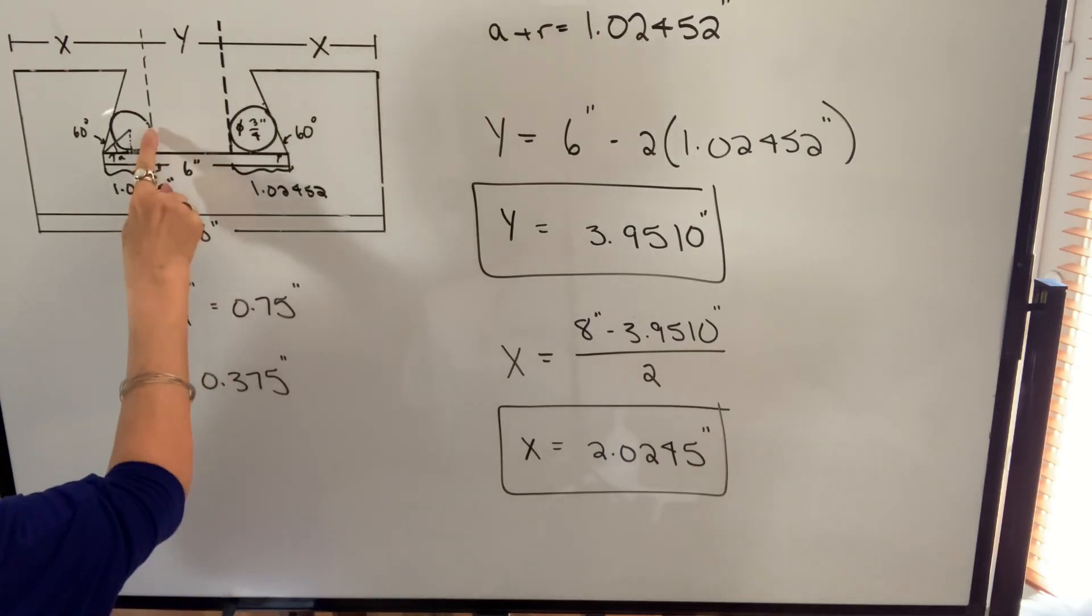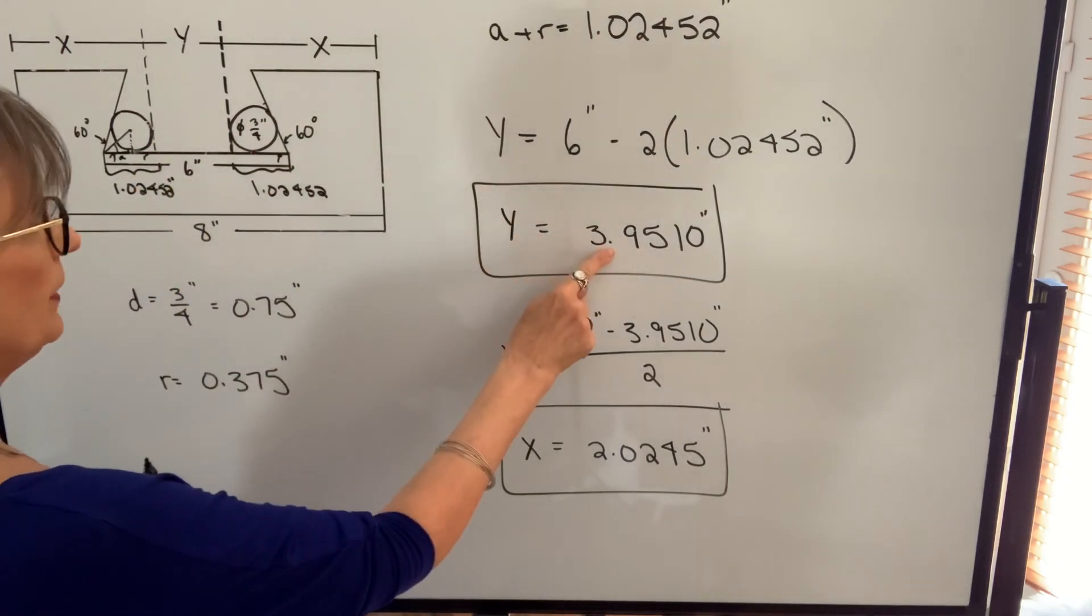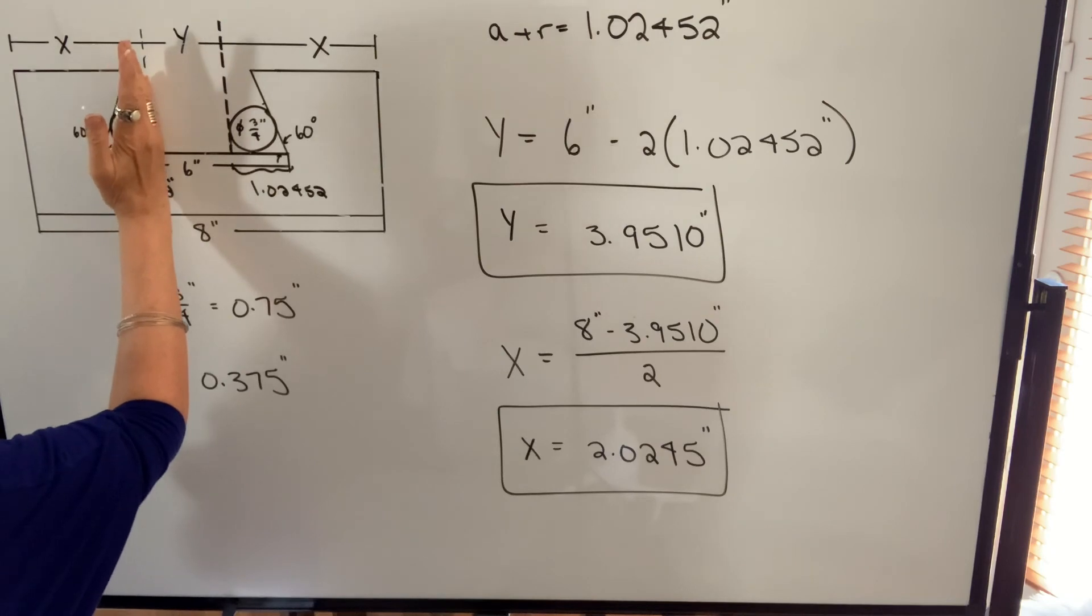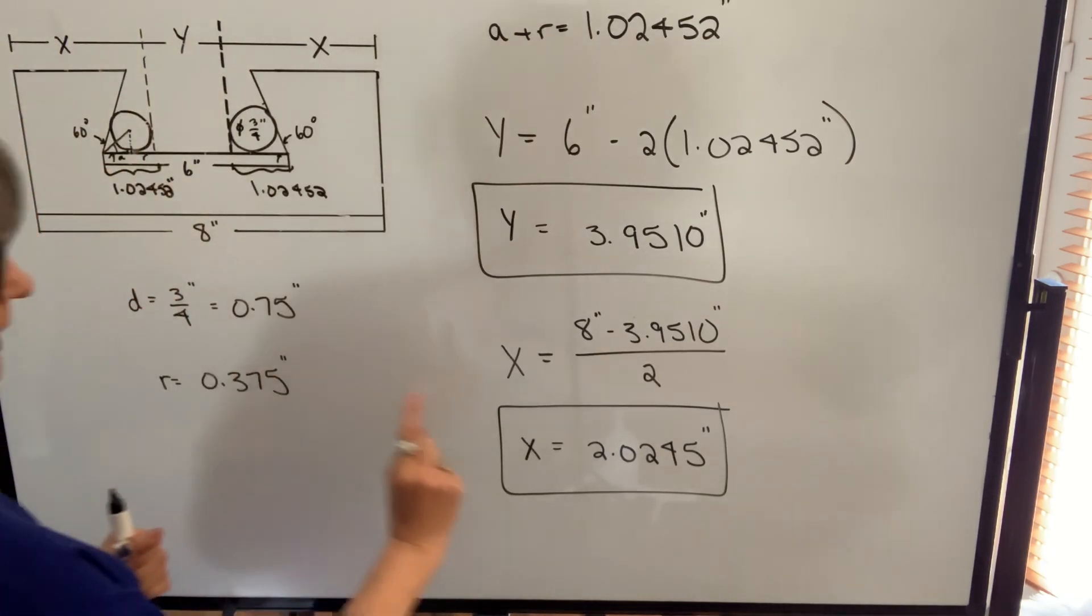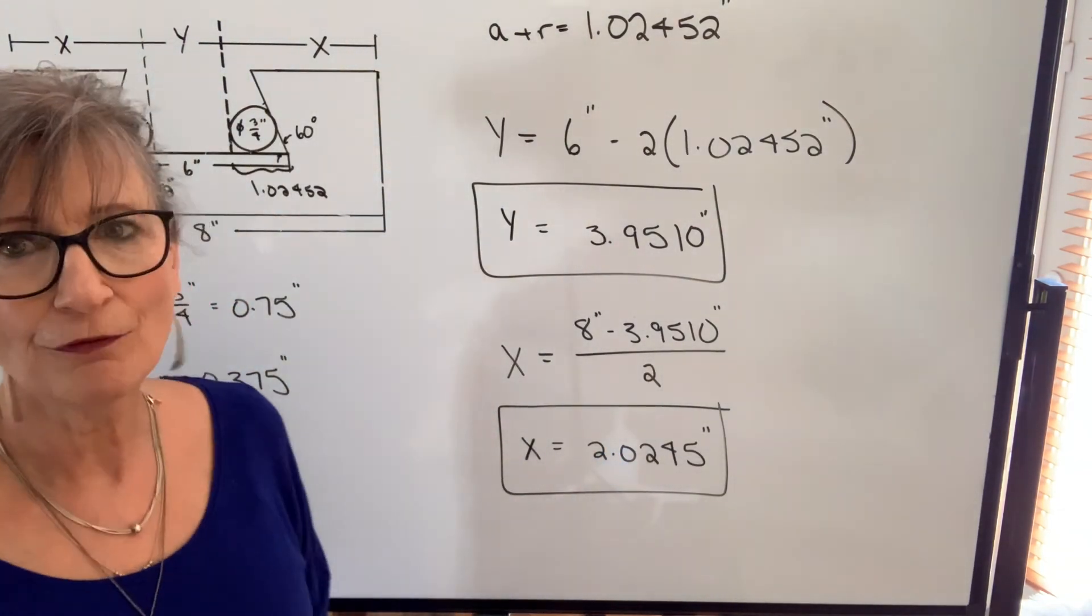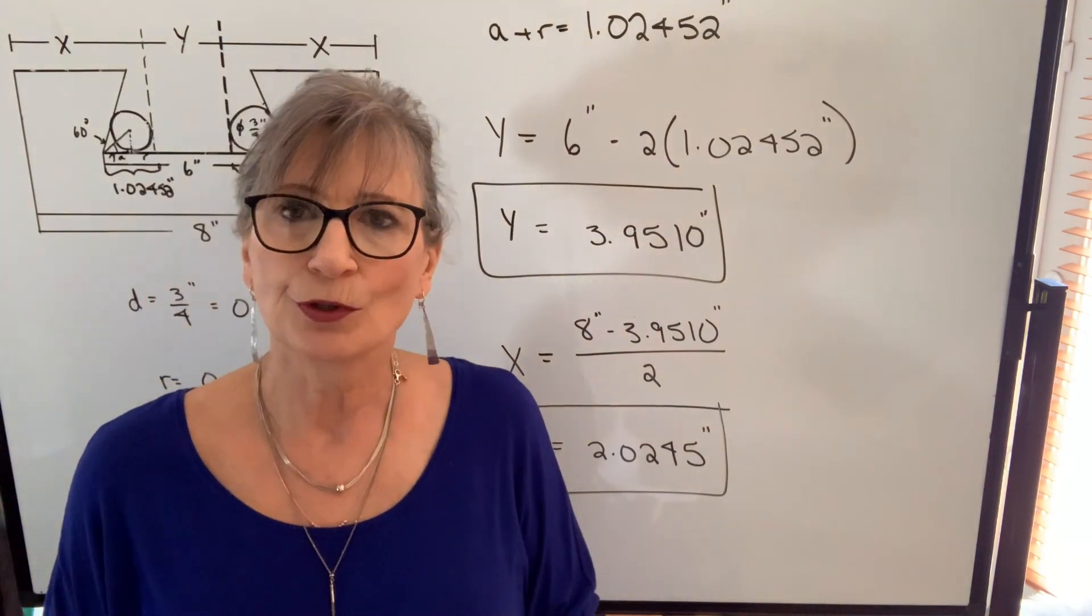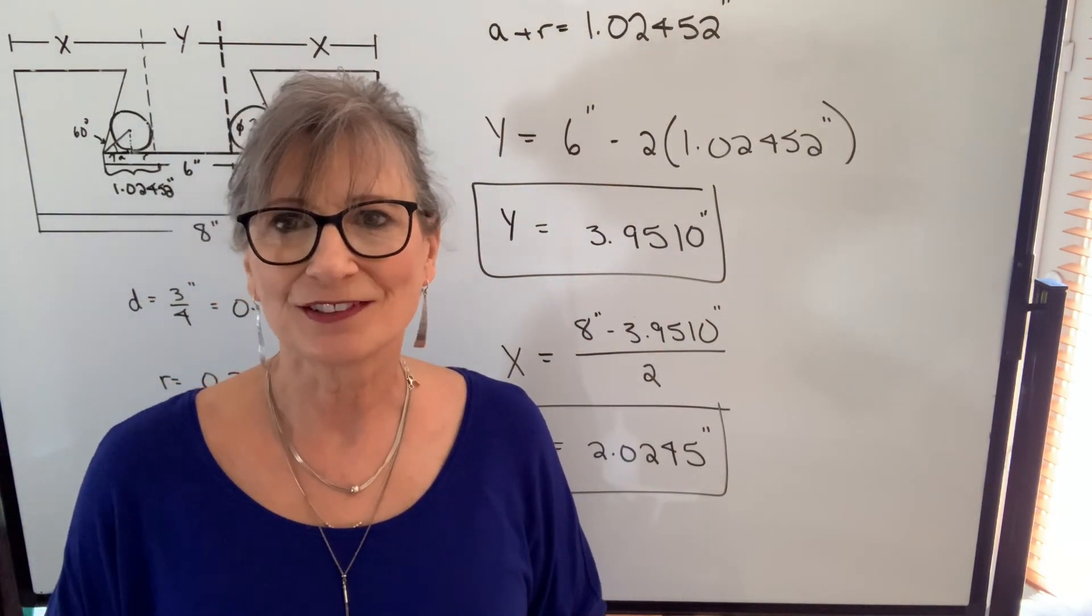Therefore, if you do the measurement between the two pins and get this value, and from the crown of one of the pins to the outside edge and get this value, you can be confident that you've machined your dovetail to the blueprint dimensions. We'll see you next time.